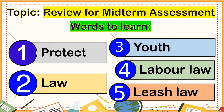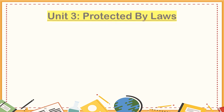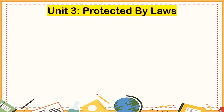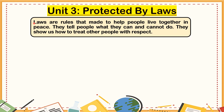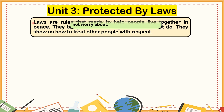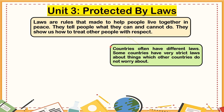Let us now discuss the last topic included in your midterm assessment which is Unit 3, Protected by Laws. Laws are rules that are made to help people live together in peace. They tell people what they can and cannot do. They show us how to treat other people with respect. Because of laws, we are able to live a peaceful life and control ourselves from things we are not supposed to do. Countries often have different laws — some are very strict, some are not strict at all, or this kind of law doesn't even exist in a particular country.